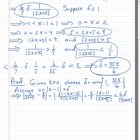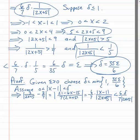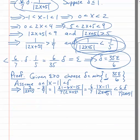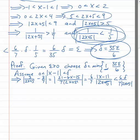From our scratch work above, we know that delta is the minimum of one and thirty-five epsilon over six. Also from our scratch work, we know that one over the absolute value of two x plus five will be less than one fifth, provided our delta is less than or equal to one — which it is because we've chosen delta as the minimum of these two numbers. So this last step: six delta over seven times absolute value of two x plus five is less than or equal to six over seven times thirty-five epsilon over six times one over absolute value of two x plus five.